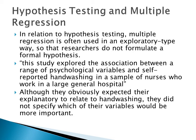In hypothesis testing and multiple regression, researchers generally do not formulate a formal hypothesis. It's more of an exploratory type of research. When we form a hypothesis, it's pretty specific — usually one or two independent variables and the dependent variable. With multiple regression, we're looking at many variables that could affect the end result. For example, researchers might say the study explored the association between a range of psychological variables and self-reported hand washing in a sample of nurses.